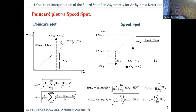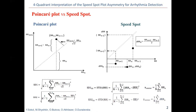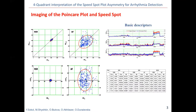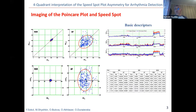The X coordinate is the current value of the RR interval, and the Y coordinate is the value of the rate of change in the duration of RR intervals near the current value of RR. Clouds formed by the set of such points, both in Poincaré plots and in the proposed method, are characterized by SD1 and SD2 descriptors, calculated as the length of the ellipse axes that enclose this cloud.